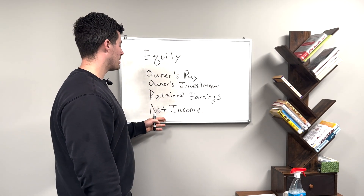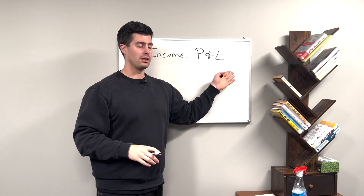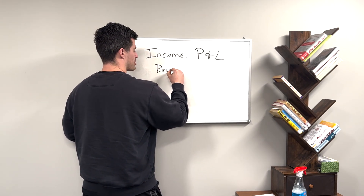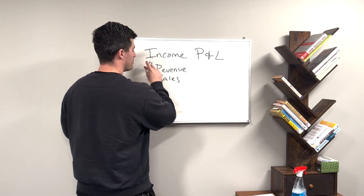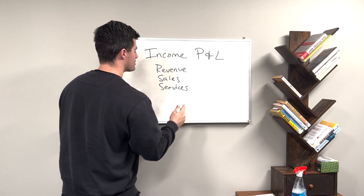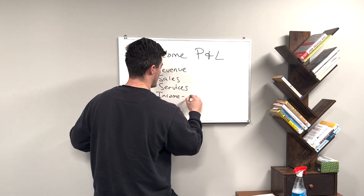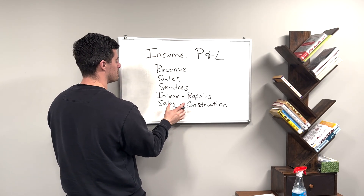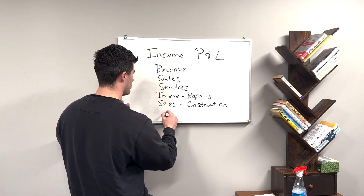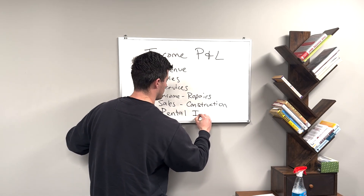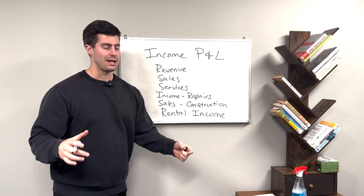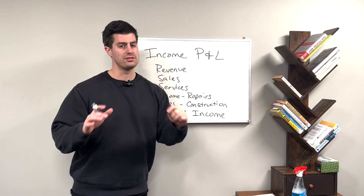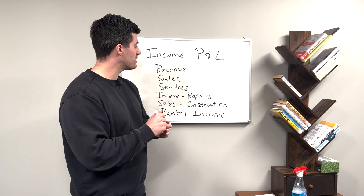Now we're going to talk about profit and loss — income statement categories — starting at the top with income. Some people call it revenue, some call it sales, some call it income or services. Some have more specific categories like income-repairs or sales-construction, or if they're a real estate investor, rental income. All of this is essentially the same thing — it's all money they're receiving for services or products they provided. Income is generally pretty simple.